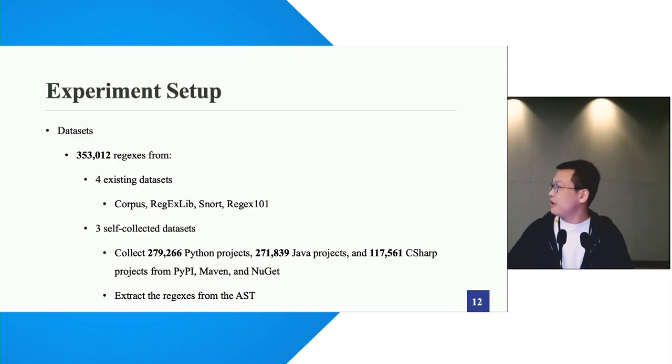Coming to the evaluation part. Our evaluation dataset contains four existing datasets and three self-collected datasets. For the self-collected datasets, we collect them from many real-world projects. In total, they contain more than 300,000 rejects.